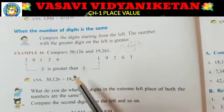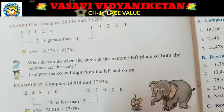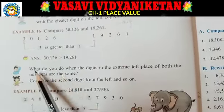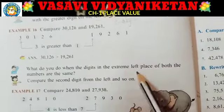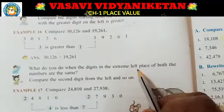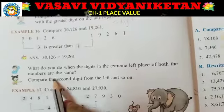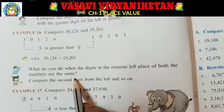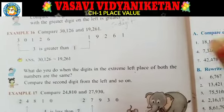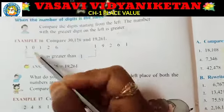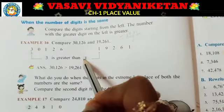Now today I am going to explain examples 17 and 18. See, what do you do when the digits in the extreme left place of both numbers are the same? Left side — low number. Example 16: first it is the left side, first digit on a digit — we compare.